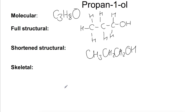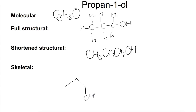For the skeletal formula of propan-1-ol we only need to show the bonds and where we have the OH. So we have a carbon at the end of the chain going to the second carbon to the third carbon, and then we have an O — and this is the only H that we need to show, the one joined onto the oxygen.